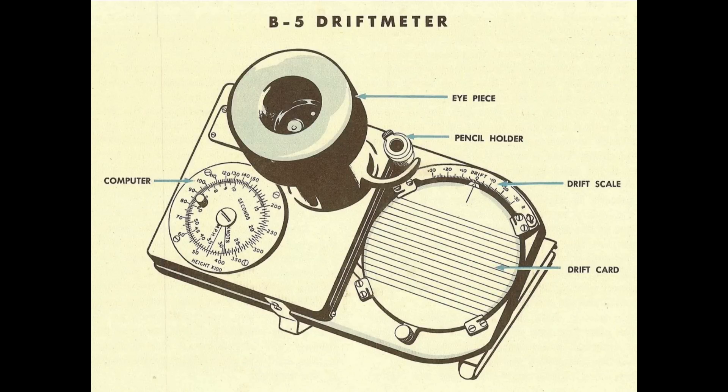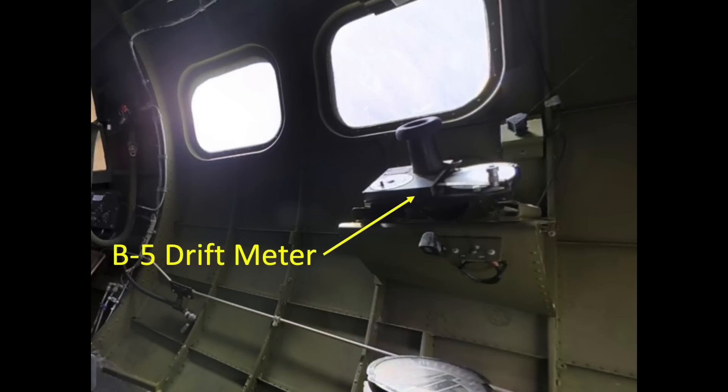The intent of this video is to discuss the function and usage of the B-17 bomber's B-5 drift meter. The bomber's drift meter instrument is located in the navigator's compartment and is used to measure both drift and ground speed. Drift occurs when the plane is flying in a crosswind. Drift, measured in degrees, is the angle difference between the true heading of the aircraft and the actual path of the aircraft.